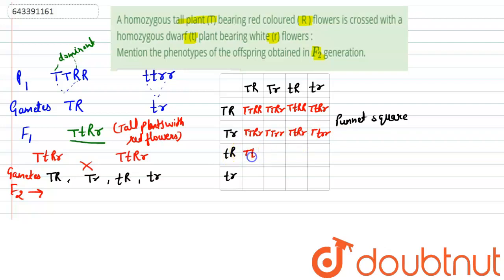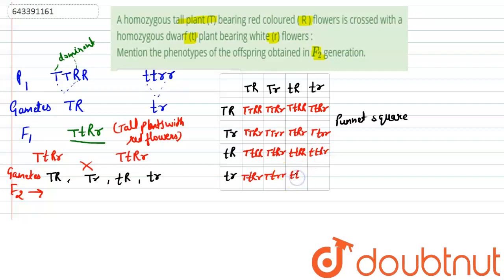Continuing the Punnett square: capital T small t capital R capital R; capital T small t capital R small r; capital T small t capital R small r; capital T small t small r small r; small t small t capital R small r; small t small t capital R small r; and small t small t small r small r.